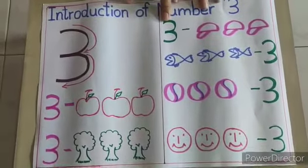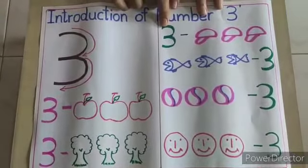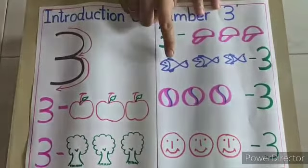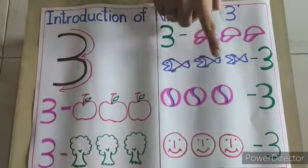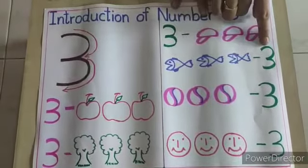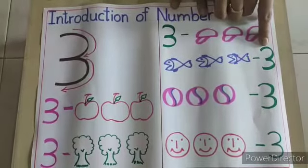Now suppose if the objects are given, you have to first count them using your pointer finger. 1, 2, 3. 3 fishes. So we have to write number 3 in front of 3 objects.